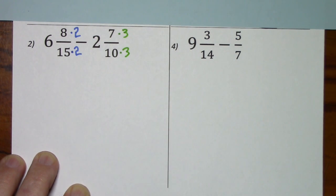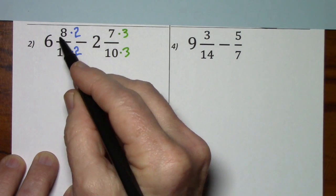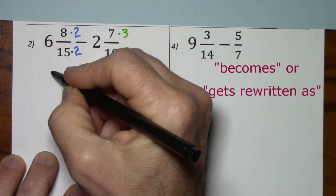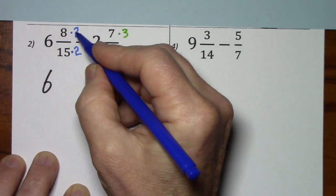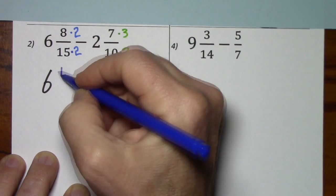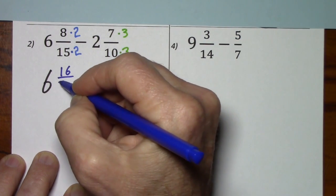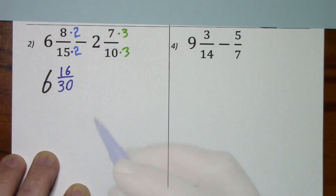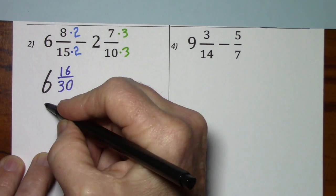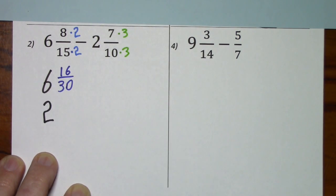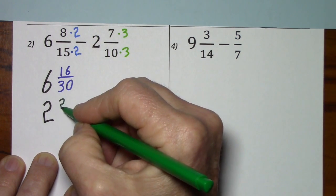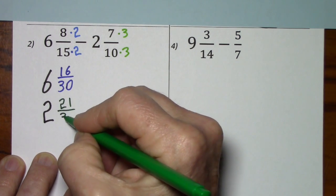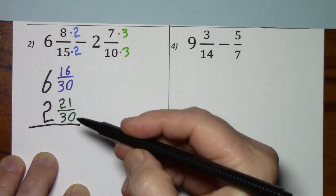The signs are different, we will be subtracting, but I always put the larger number on top anyway. So, 6 and 8 fifteenths becomes 6 and 16 thirtieths. 2 and 7 tenths becomes 2 and 21 thirtieths.